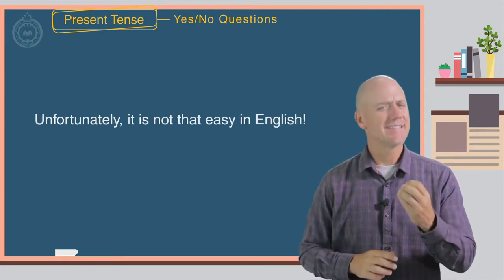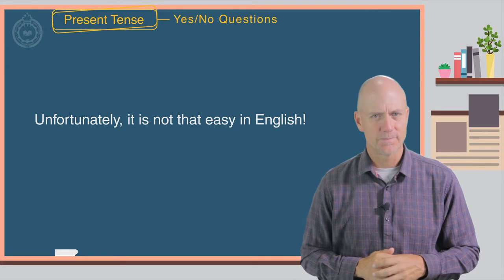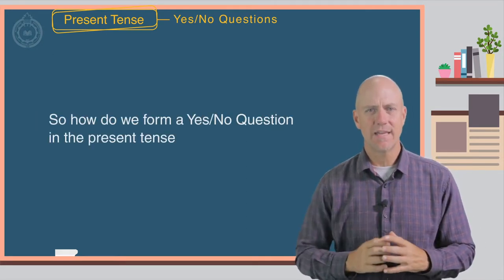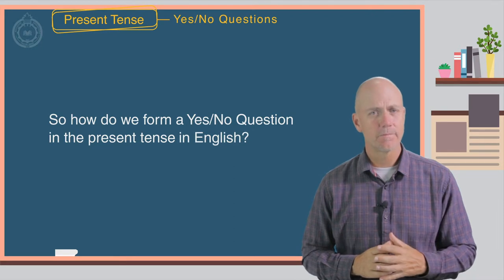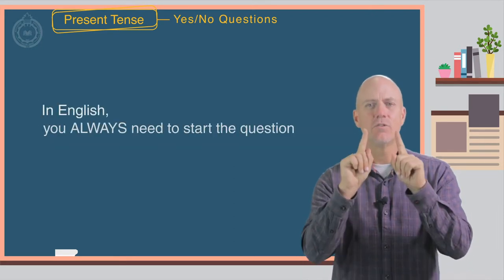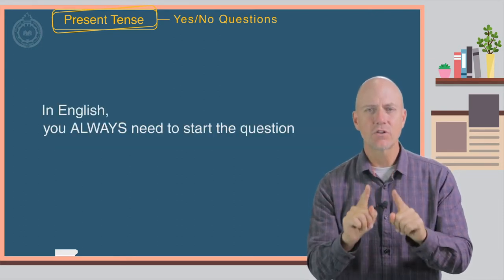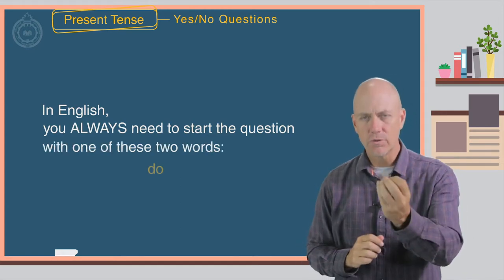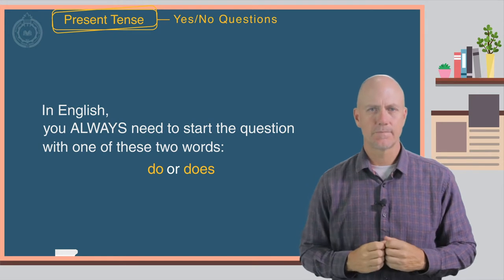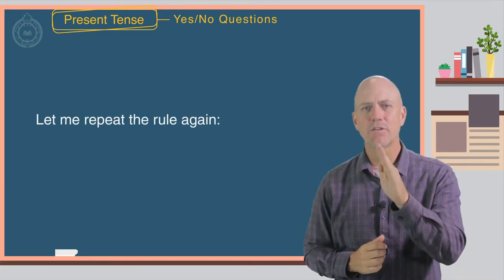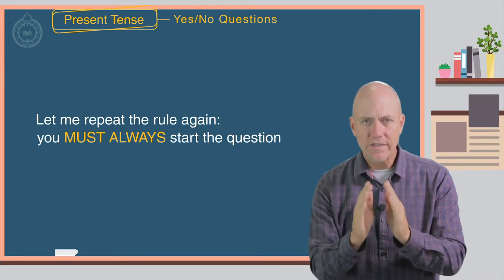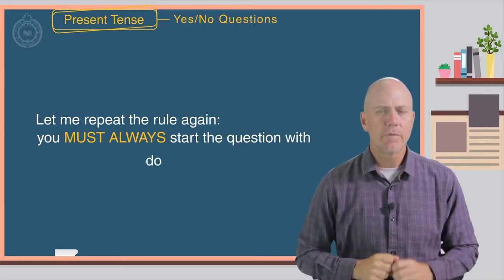Unfortunately, it's not that easy in English. So how do we form a yes-no question in the present tense in English? In English, you always need to start the question with one of these two words: do or does. Let me repeat the rule again. You must always start the question with do or does.